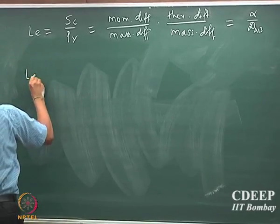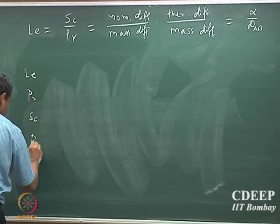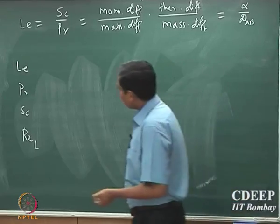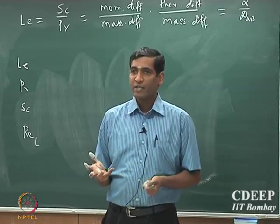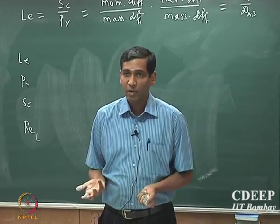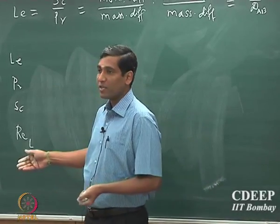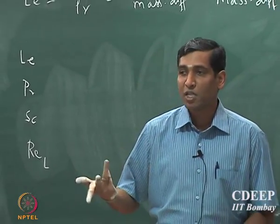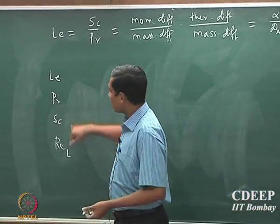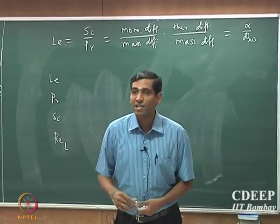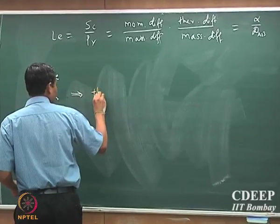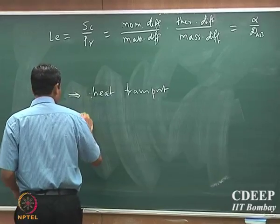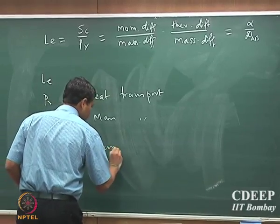Really what we have found is that Lewis number, Prandtl number, Schmidt number, and Reynolds number — that is based on the length of the plate, because you have looked at a flat plate, and you could always consider other geometries — these four numbers essentially characterize the diffusive properties of all three different transport mechanisms. So you get a way by which you can compare all of these. Prandtl number characterizes the thermal transport or heat transport processes, Schmidt number characterizes the mass transport process, and Reynolds number characterizes the momentum transport process.